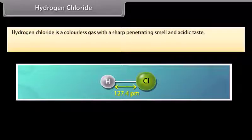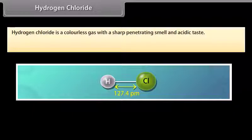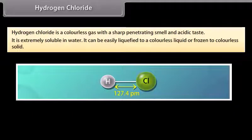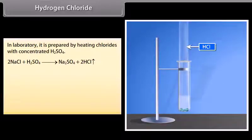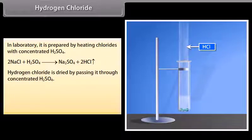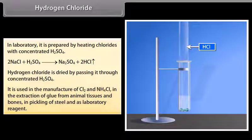Hydrogen chloride: In 1648, Glauber obtained hydrogen chloride by heating common salt with concentrated sulfuric acid. It is a colorless gas with a sharp penetrating smell and acidic taste. It is extremely soluble in water — one volume of water dissolves about 450 volumes of hydrogen chloride under ordinary conditions. It can be easily liquefied to a colorless liquid or frozen to a colorless solid. In the laboratory, it is prepared by heating chlorides with concentrated H2SO4, and dried by passing through concentrated H2SO4.